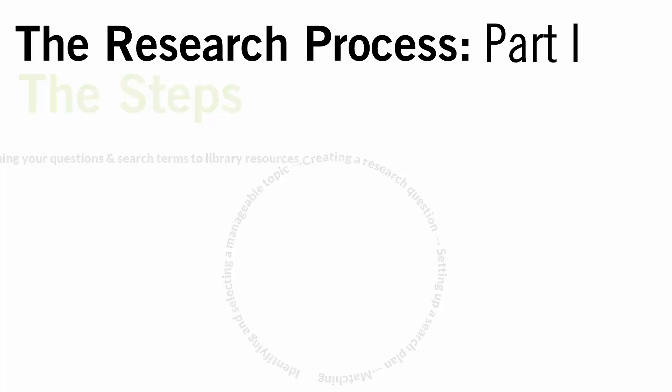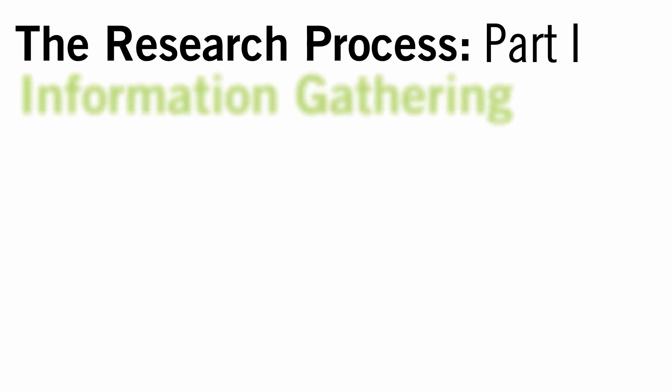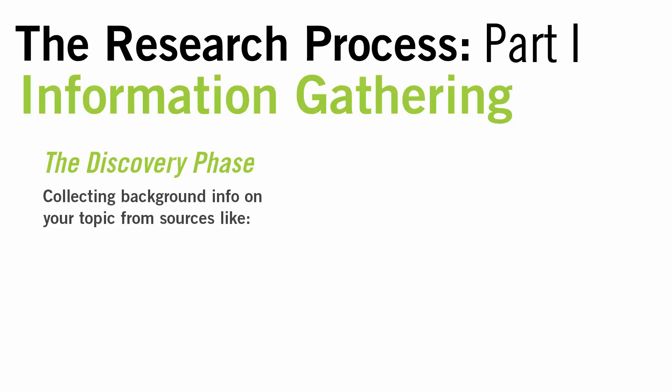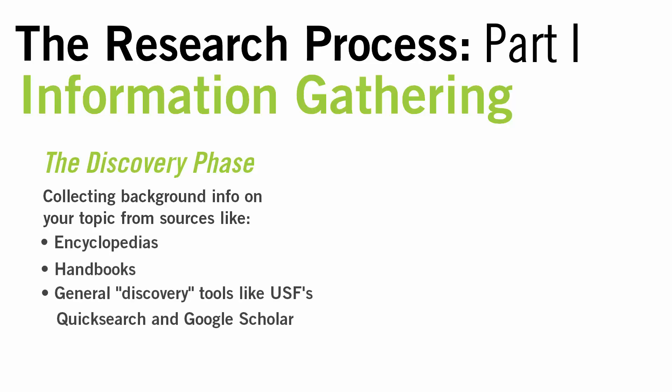You could say that the research process features two major phases of information gathering. The first phase can be called the discovery phase — collecting background information on a topic from sources like encyclopedias, handbooks, and general discovery tools like USF's Quick Search or Google Scholar. This gives you an overview and lets you see how a topic is being discussed generally in the literature, which will then help you narrow it down and manage it better.